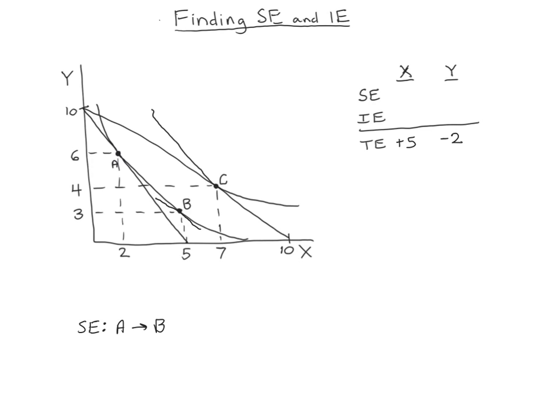So our substitution effect is the movement from A to B. That represents consuming three extra units of x and reducing consumption of y by three units. And this is actually something that's always going to be true. You're always going to see one substitution effect positive, one substitution effect negative. They have to go in opposite directions.